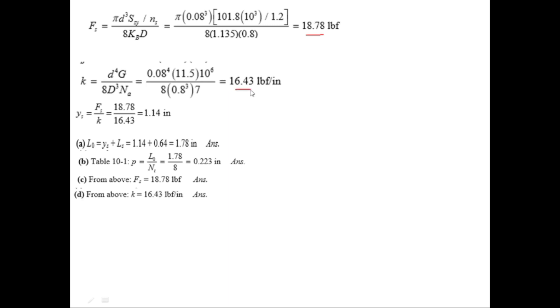In part E we need to determine whether buckling would occur. To avoid buckling, L0 should be less than L critical. L critical equals 2.63 times mean coil diameter divided by alpha.